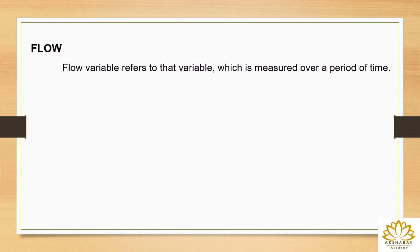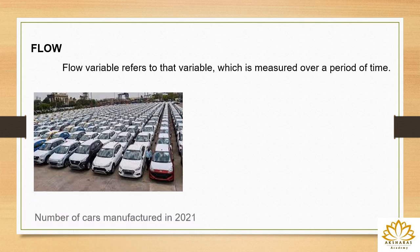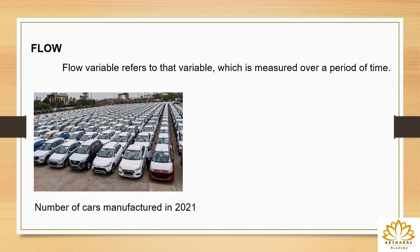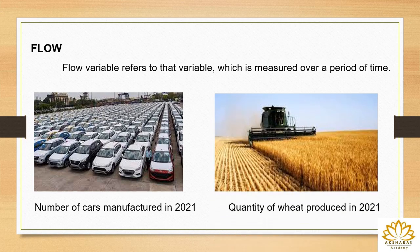A flow is a variable which is measured over a period of time. For example, the number of cars manufactured in 2021 — how many cars were manufactured during the year 2021. The year 2021 is a period of time, not a particular date. Another example is the quantity of wheat produced in 2021 — how much wheat was produced during that year. Unlike the stock example which specified a particular date, this specifies a period of time, so it is called a flow.